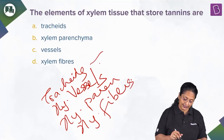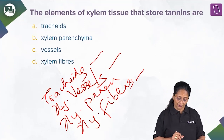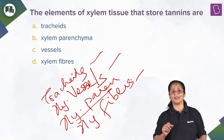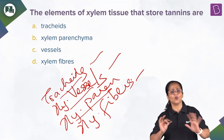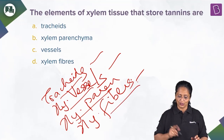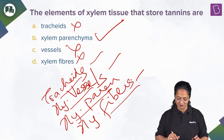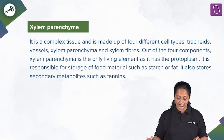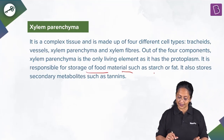So the elements of xylem tissue that store tannins is xylem parenchyma — you cannot find tannins in the other cells because there is no protoplasm in them. Tracheids and xylem vessels help in conducting water; fibers provide mechanical support. The right answer is xylem parenchyma. Xylem parenchyma is the only living element as it has protoplasm, responsible for storage of food materials such as starch or fat, and also stores secondary metabolites such as tannin.